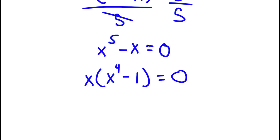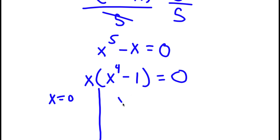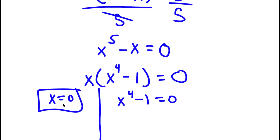This gives me two equations. I have x is equal to 0, and I have x to the power of 4 minus 1 is equal to 0. So x equals 0 is already a solution.